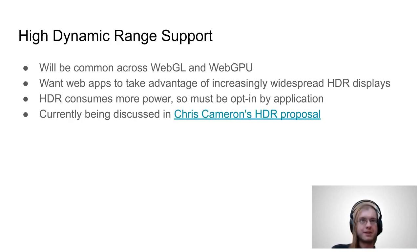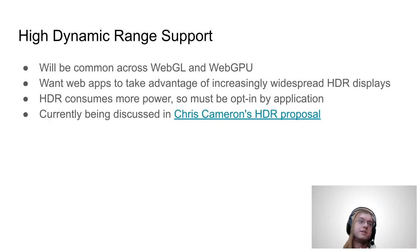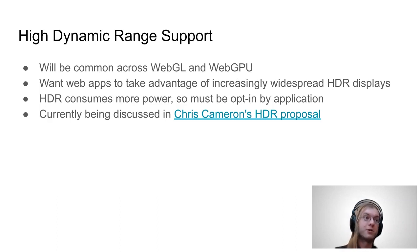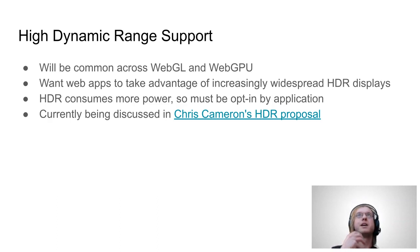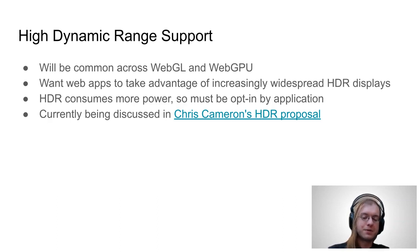For high dynamic range support, it's going to be pretty similar between WebGL and WebGPU. We really want apps to be able to take advantage of these new HDR displays that are becoming more and more common. One caveat is that HDR does take a lot more power, usually because you have framebuffers that are at least twice as big in terms of larger pixel formats. So we can't turn it on by default — we need it to be opt-in by the application, with clear signals about how it wants us to render. Chris Cameron has made a great proposal for how to deal with this in WebGL, WebGPU, and Canvas in general, and that's the direction we're currently going.